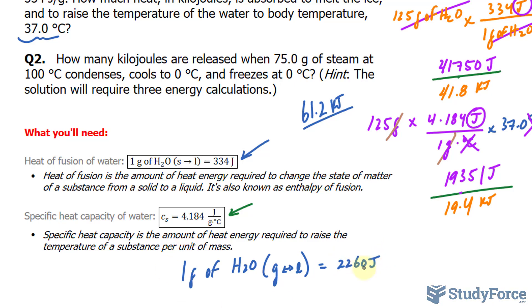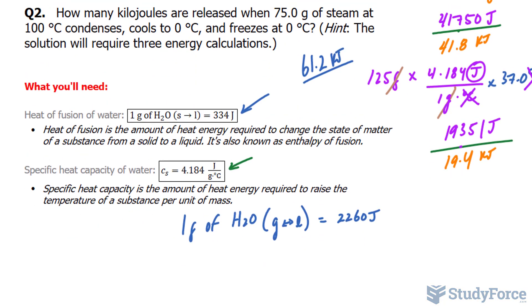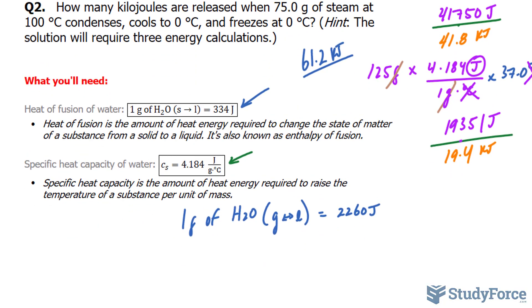So we'll need this constant to tell us how much energy is required first to make the steam go to liquid form. We'll also need to use this number to tell us how much energy is required to take 75.0 grams of steam from 100 degrees to zero degrees. And then we'll need to find out how much energy is required to freeze it. So there are three calculations, the first being the heat of vaporization.